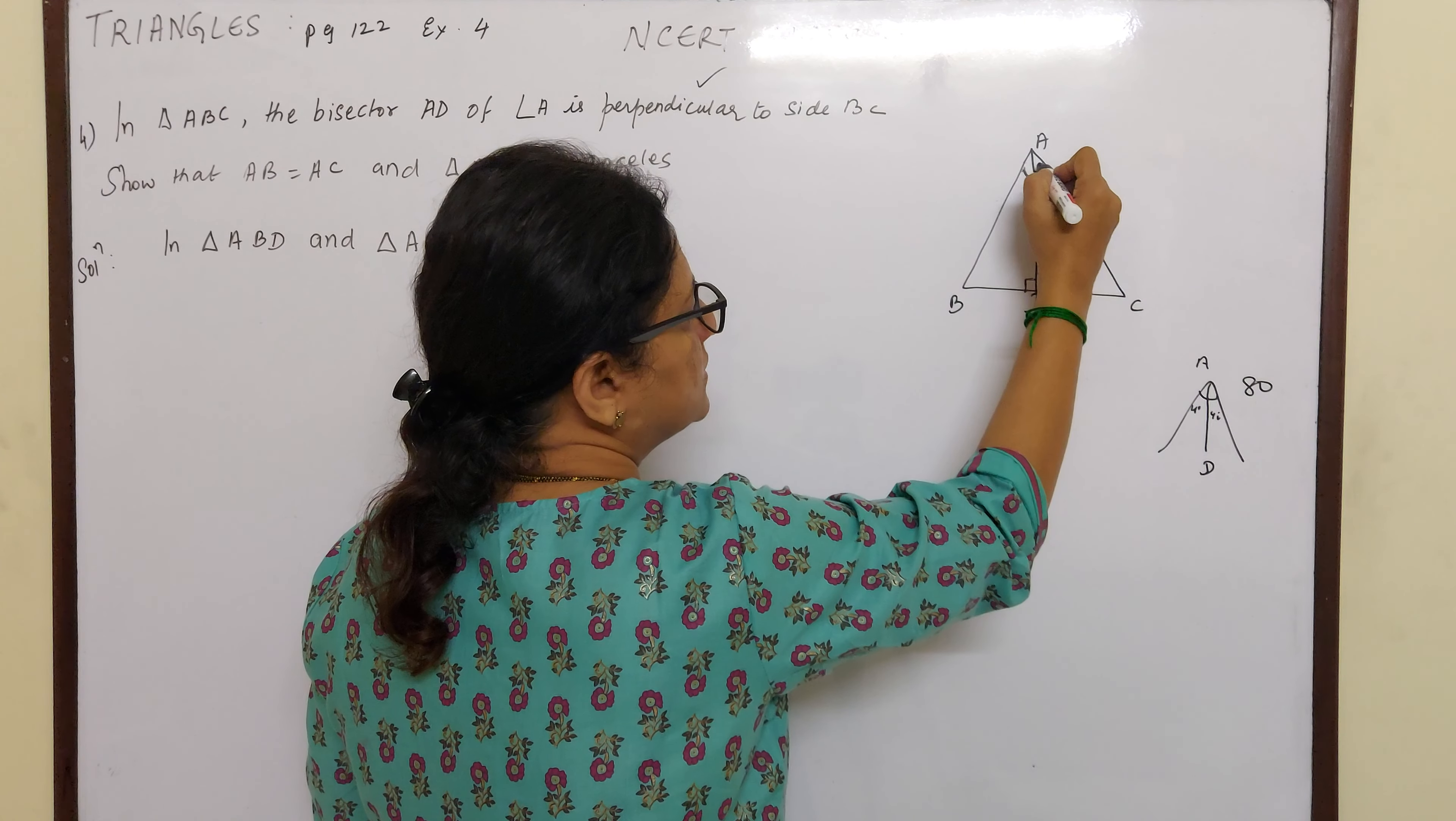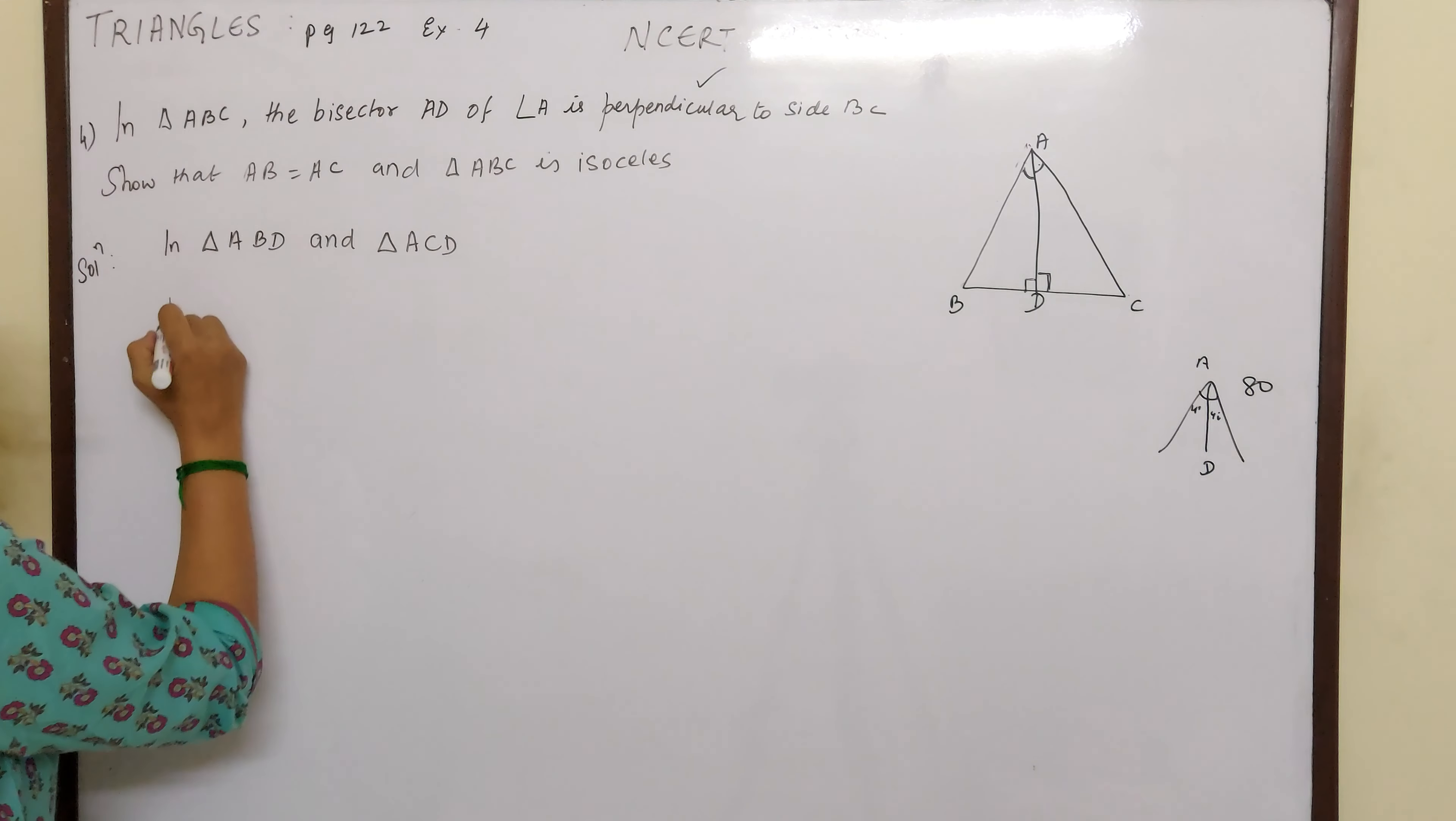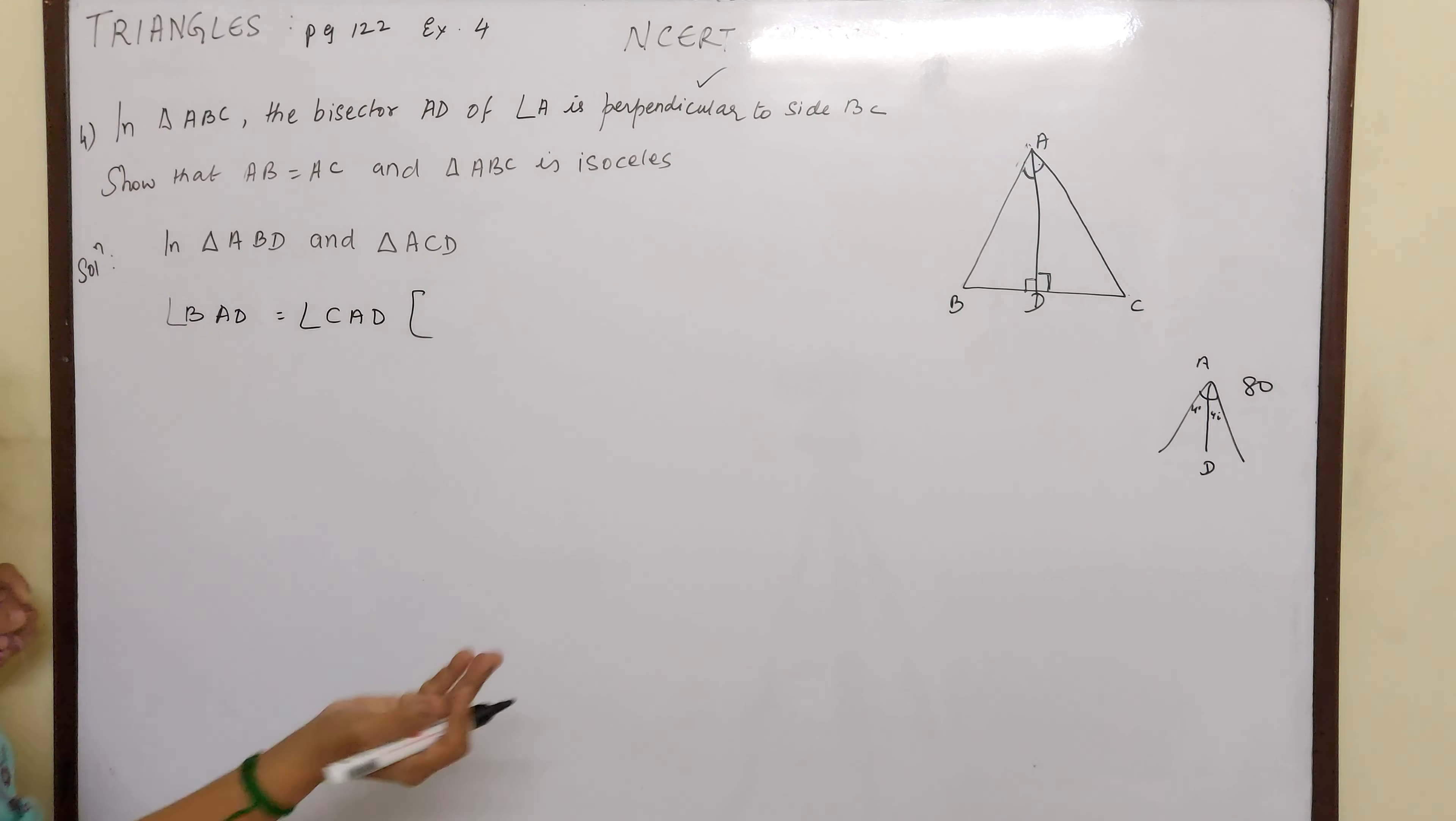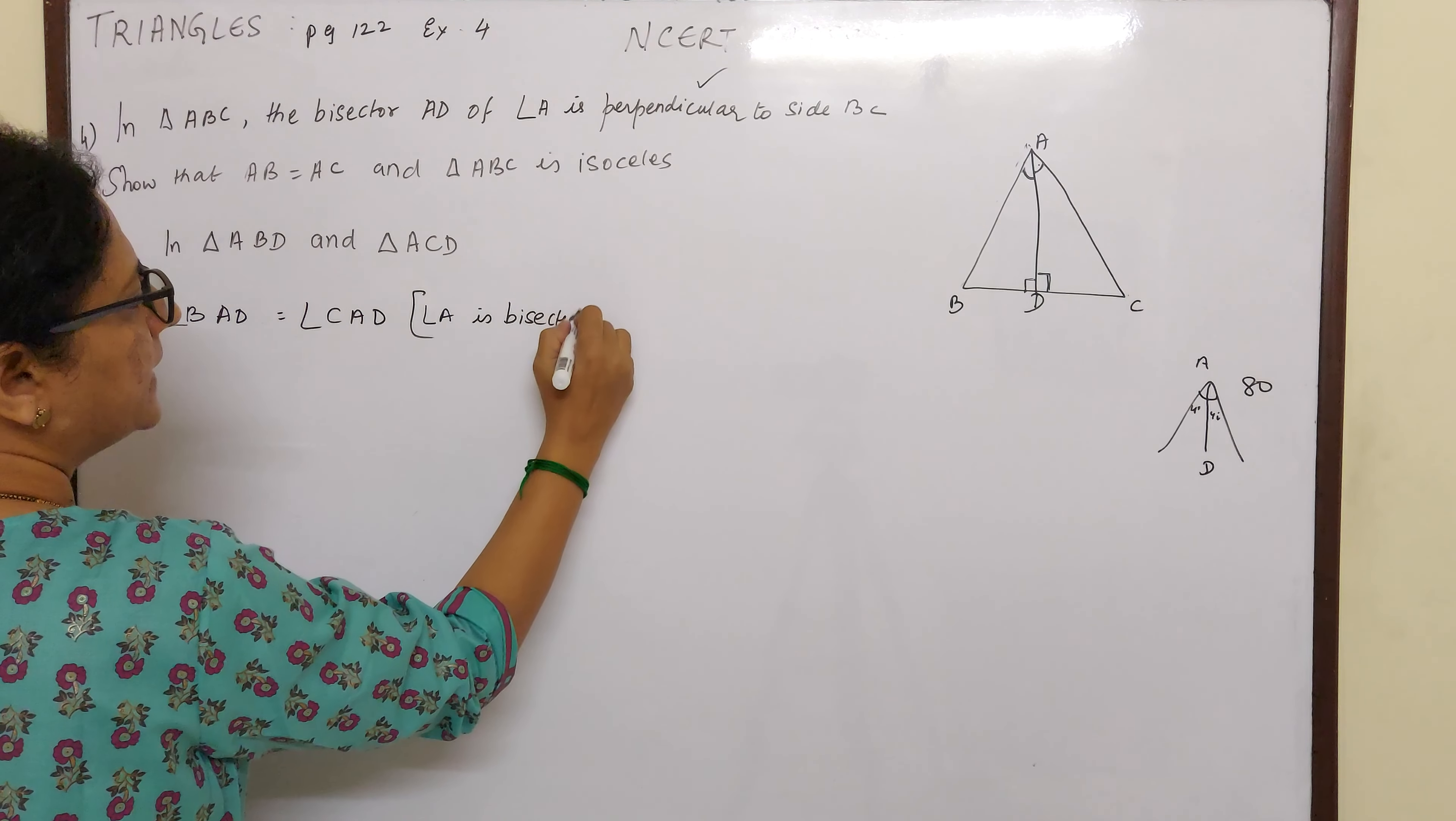First is this is equal to this, so I can say BAD is equal to CAD. So that will be my first point, angle BAD is equal to angle CAD. What is the reason? Because angle A is bisected by AD.